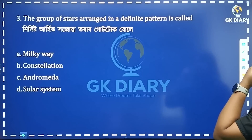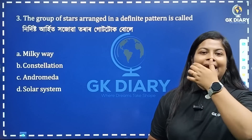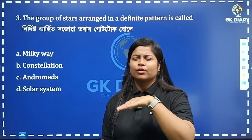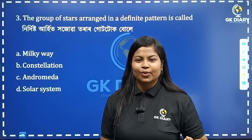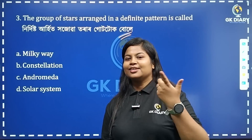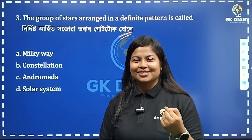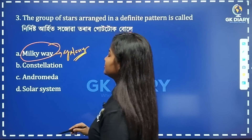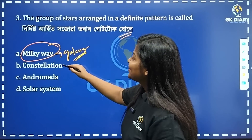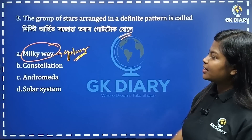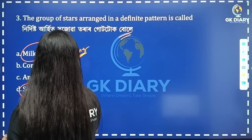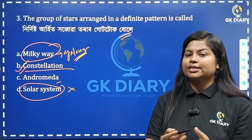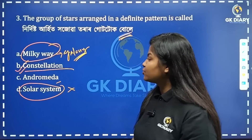Next question: the group of stars arranged in a definite pattern is called — what do you call it? Milky Way is a galaxy. We have searched the meaning of galaxy. Milky Way is a galaxy. The group of stars arranged in a definite pattern — what is a constellation? Andromeda is the correct option; it is a constellation. Option B is the correct answer. If we have a galaxy, it is the Milky Way — Option A. Constellation is the correct answer for a group of stars in a definite pattern.